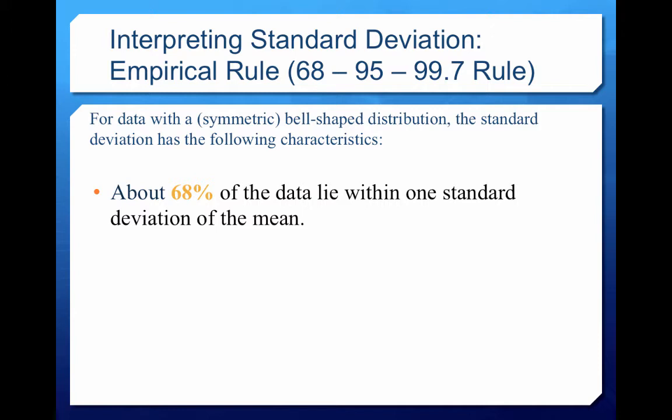So when we have data that is bell-shaped or symmetric, the standard deviation is going to have the following characteristics. About 68% of the data lie within one standard deviation of the mean. Let's go one standard deviation out from the mean, and we're going to grab 68% of our data.